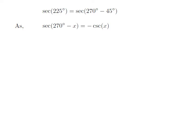As we know, the trigonometry identity secant of 270 degree minus x is equal to minus cosecant of x.